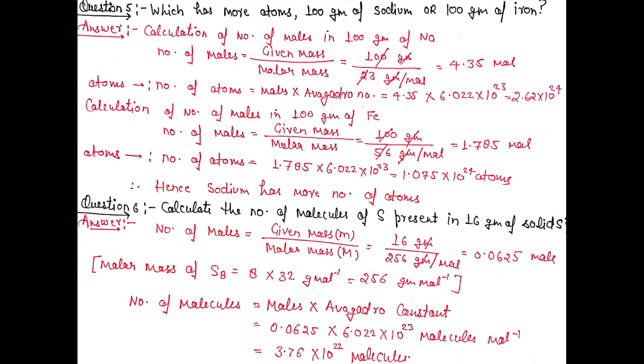Question number 6: Calculate the number of molecules of sulfur present in 16 grams of solid sulfur. Sulfur is found both elementally and molecularly. The molecular mass of sulfur molecule is S₈, which is 256 grams per mole. First we calculate the number of moles as 0.0625 moles. Then number of molecules equals moles multiplied by Avogadro's constant, giving 3.76 × 10^22 molecules.